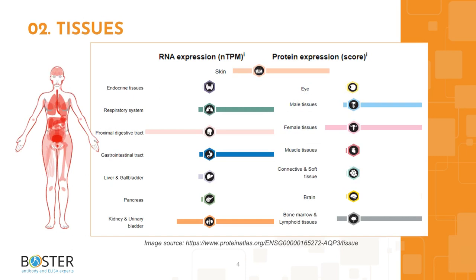Aquaporin-3 is highly expressed in the respiratory system, epithelial cells of the kidney, skin, and gastrointestinal tract, as well as other tissues.